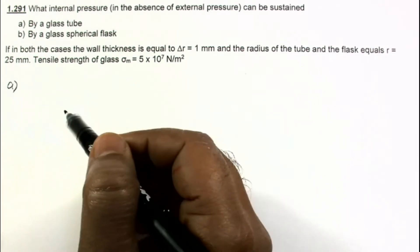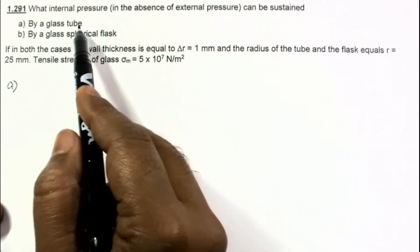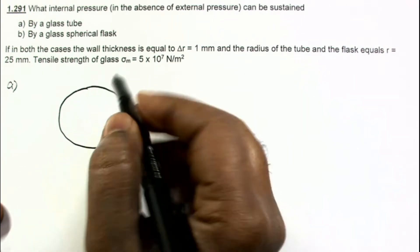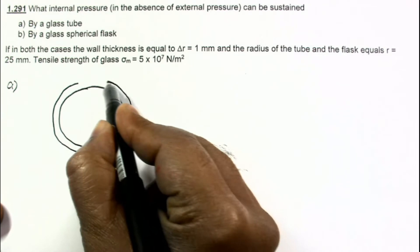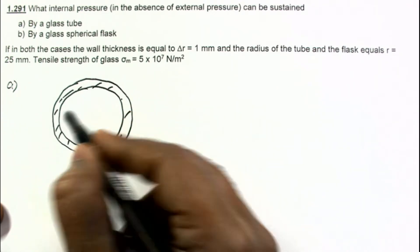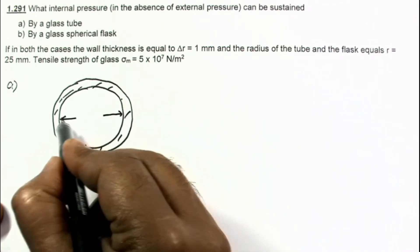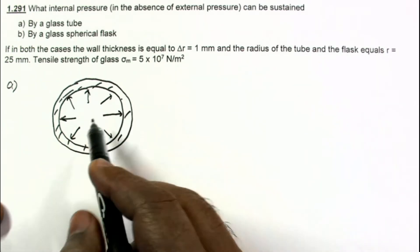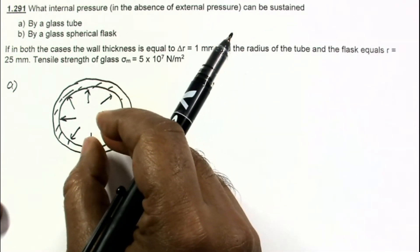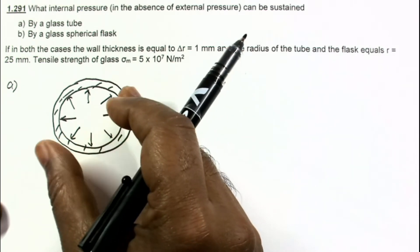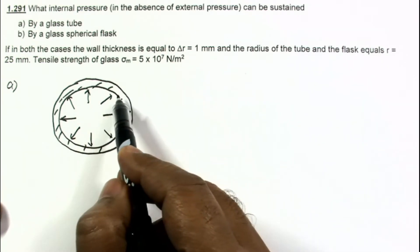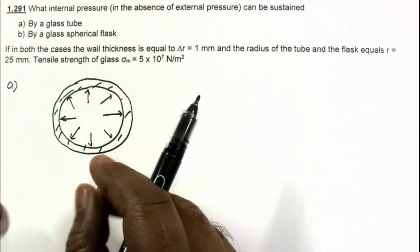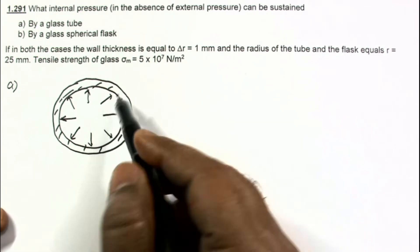For part A, it is a glass tube, meaning a cylindrical tube. Drawing the cross-section, we see the internal pressure exerts force at each point perpendicular to the surface. Due to this internal pressure it is expanding, and due to this expansion there is tension inside the material. If this tension exceeds the tensile strength, it will burst or break.